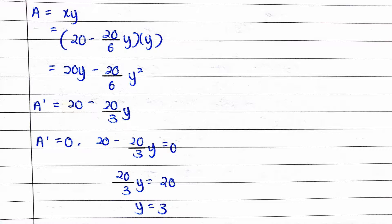We let the area be the function and we find the first derivative of area function. Next, we let the first derivative of area function equal to 0. We can find y equals to 3.